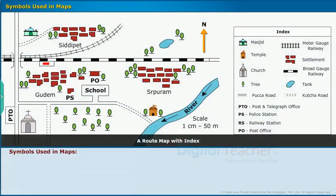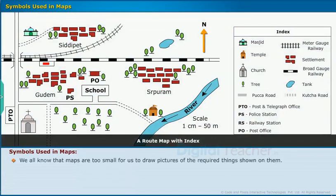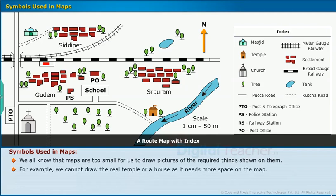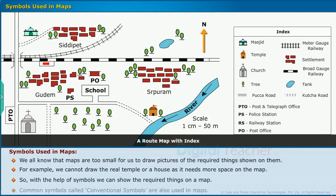Maps are too small for us to draw pictures of everything shown on them. For example, we cannot draw a real temple or a house as it needs more space. So with the help of symbols, we can show the required things on a map. Common symbols, called conventional symbols, are also used in maps.